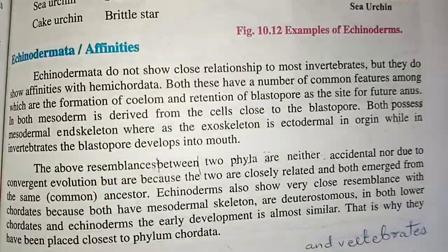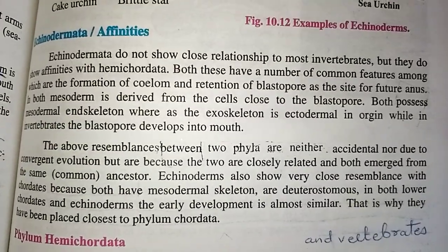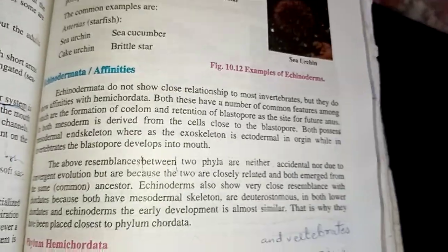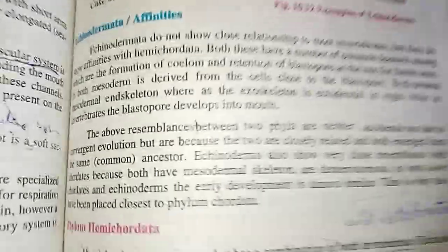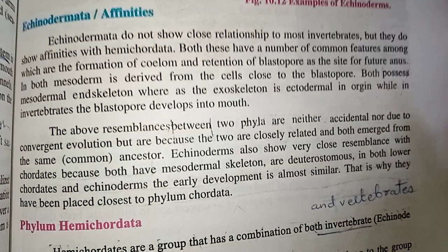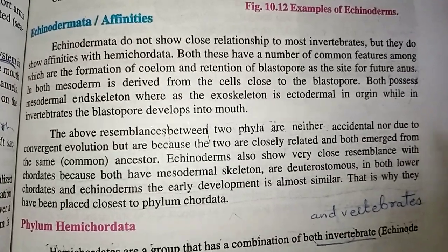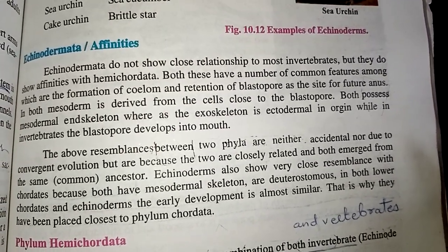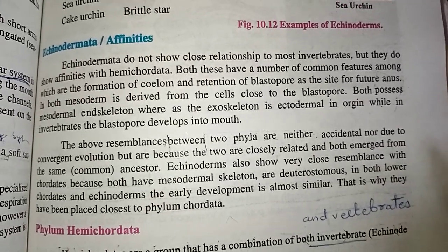Now we will discuss our last topic of this phylum: affinity. Affinity means close association. Echinoderms do not show a close relationship to most invertebrates — they are placed in the invertebrate group, but they don't show similarity to most invertebrates. However, they do show affinities with the hemichordates, which are organisms that have characteristics of both chordates and invertebrates.